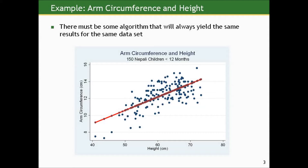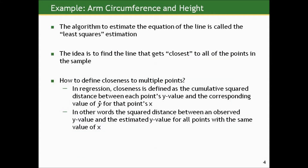The algorithm to estimate the equation of the line is called least squares estimation. The idea is to find a line that gets closest to all the points in the sample. Closeness is defined as the cumulative square distance between each point's y value and the corresponding value of y-hat for that point's x — in other words, the square distance between an observed y value and the estimated y value for all points with the same x.